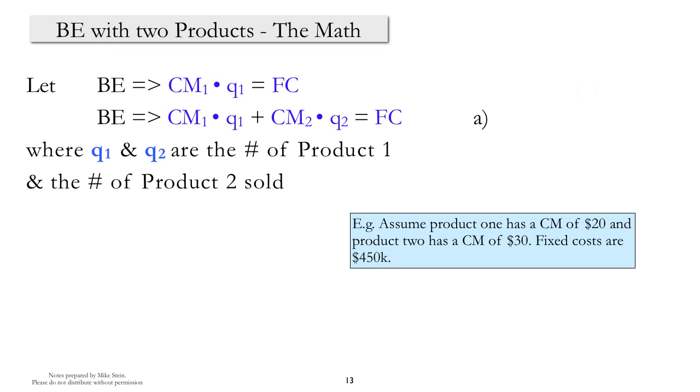In order to keep the discussion from getting too abstract, we will work a simple numerical example as we're going through the algebra. So in an example, we have two products. Product 1 has a contribution margin of $20. Product 2 has a contribution margin per unit of $30. And the total fixed costs that must be covered are $450,000.